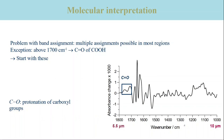When we do a band assignment, we have a problem. In most spectral regions, there are multiple assignments possible, meaning that a band in a particular spectral region can be caused by several different functional groups. Only above 1700 reciprocal centimeters can protein bands be assigned with certainty to protonated carboxyl groups, and we will now look into this region.